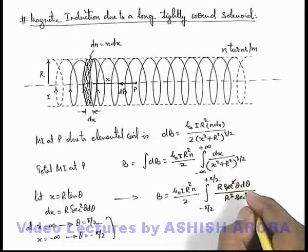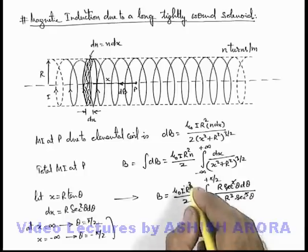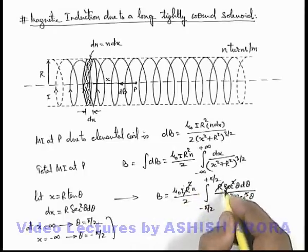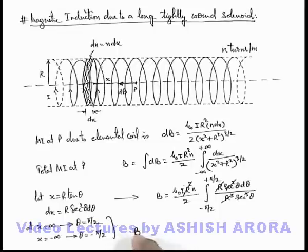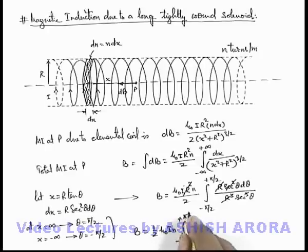Here sec² θ will cancel out with the cube term, and r² and r completely cancel out with r³. So magnetic induction we can write as (1/2) μ₀ i n, integrated from minus π/2 to plus π/2 of 1/sec θ, which we can write as cos θ dθ, of which the integration will be sin θ.